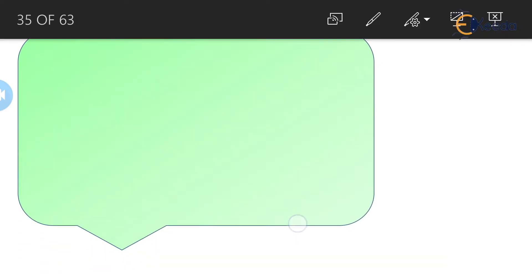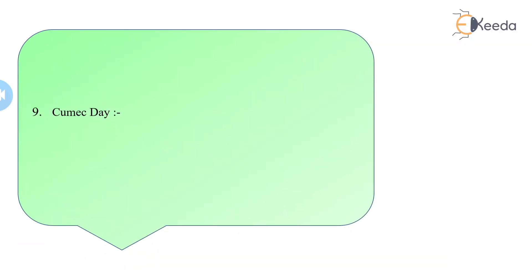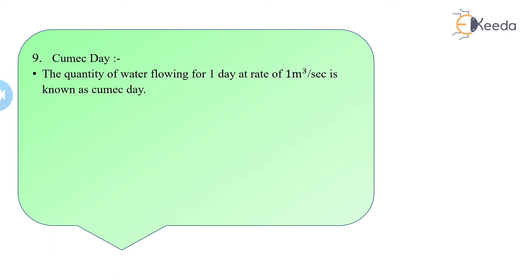After capacity factor, we have cumec day. A cumec is one meter cube per second of water — the volume of water discharging at a rate expressed in terms of seconds. The quantity of water flowing for one day at a rate of one meter cube per second is known as a cumec day.